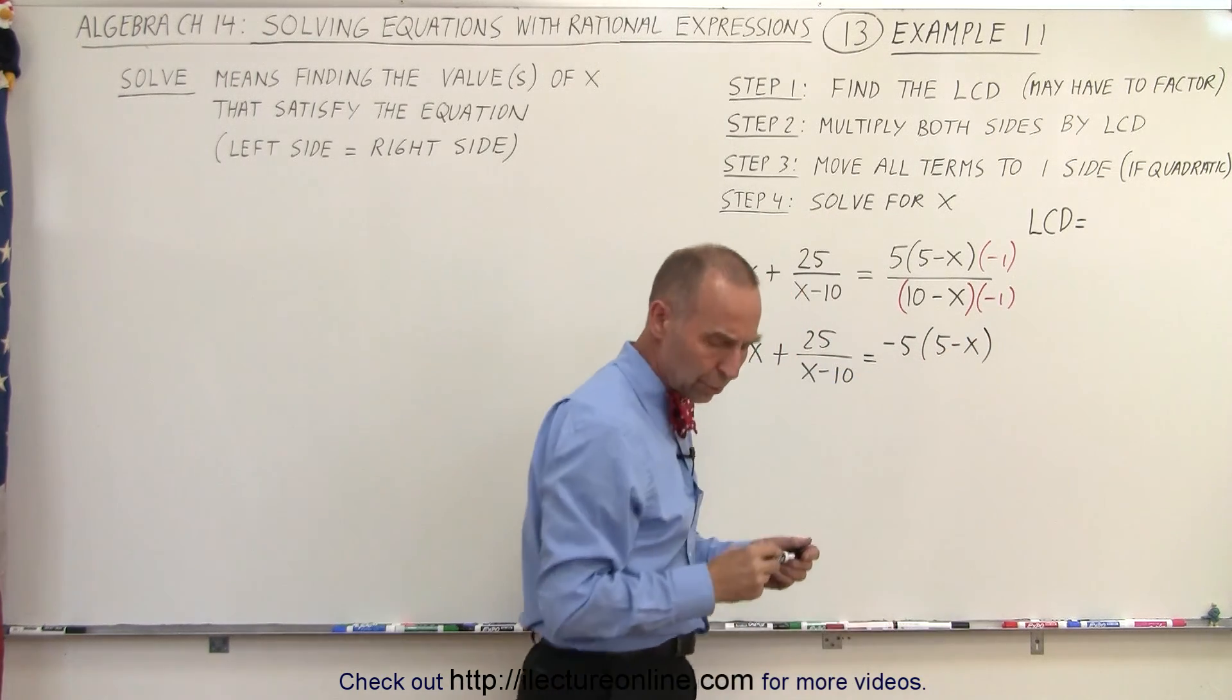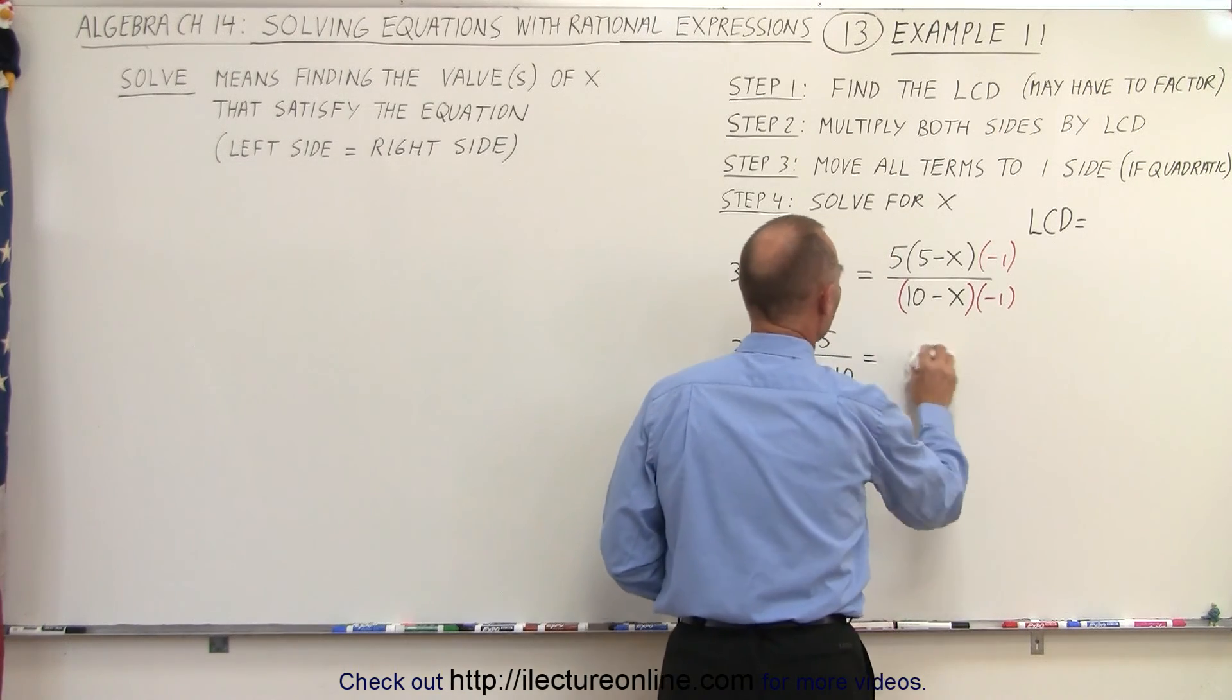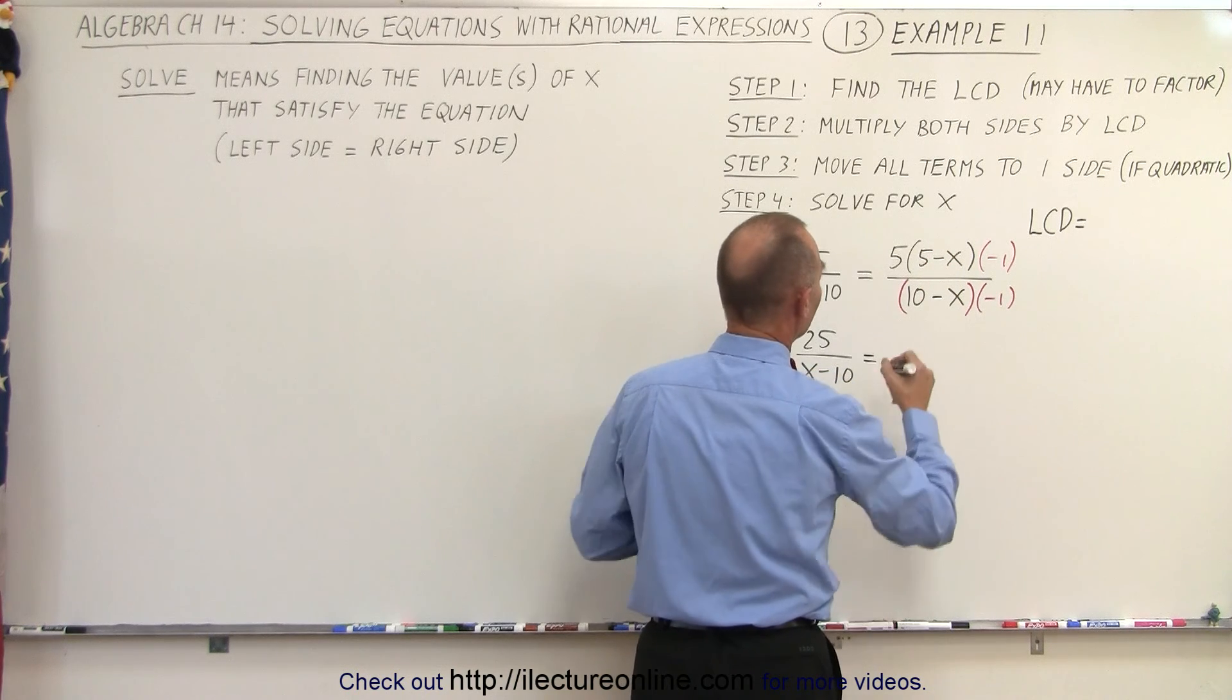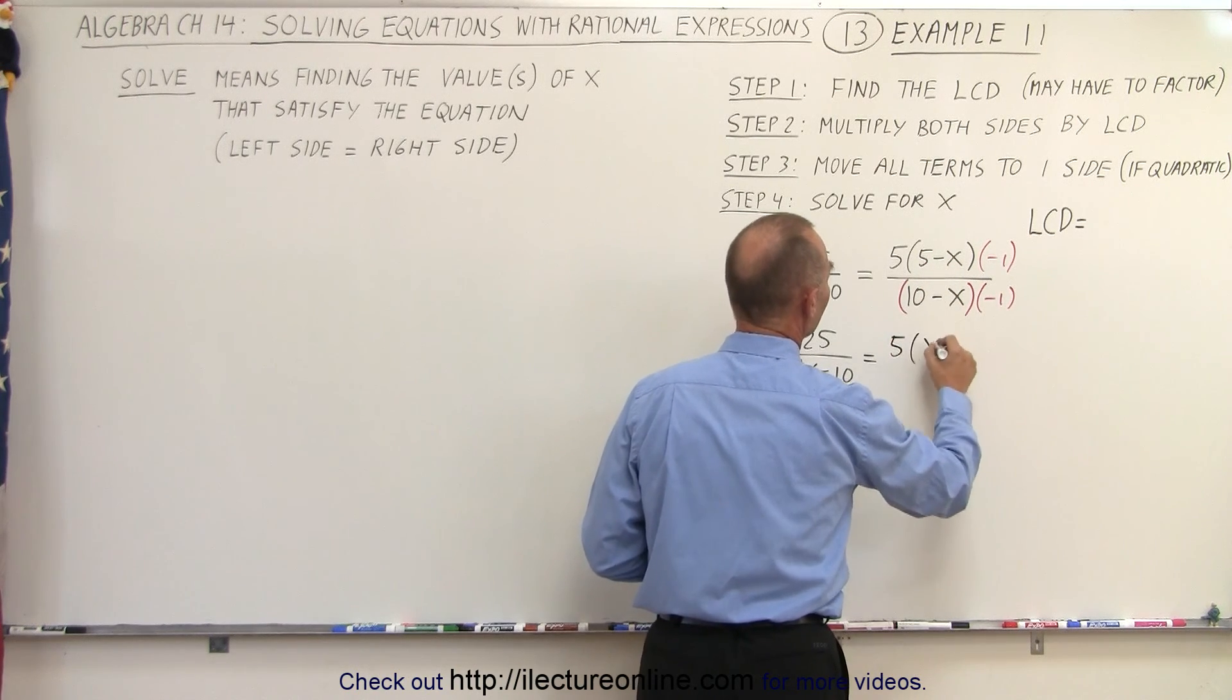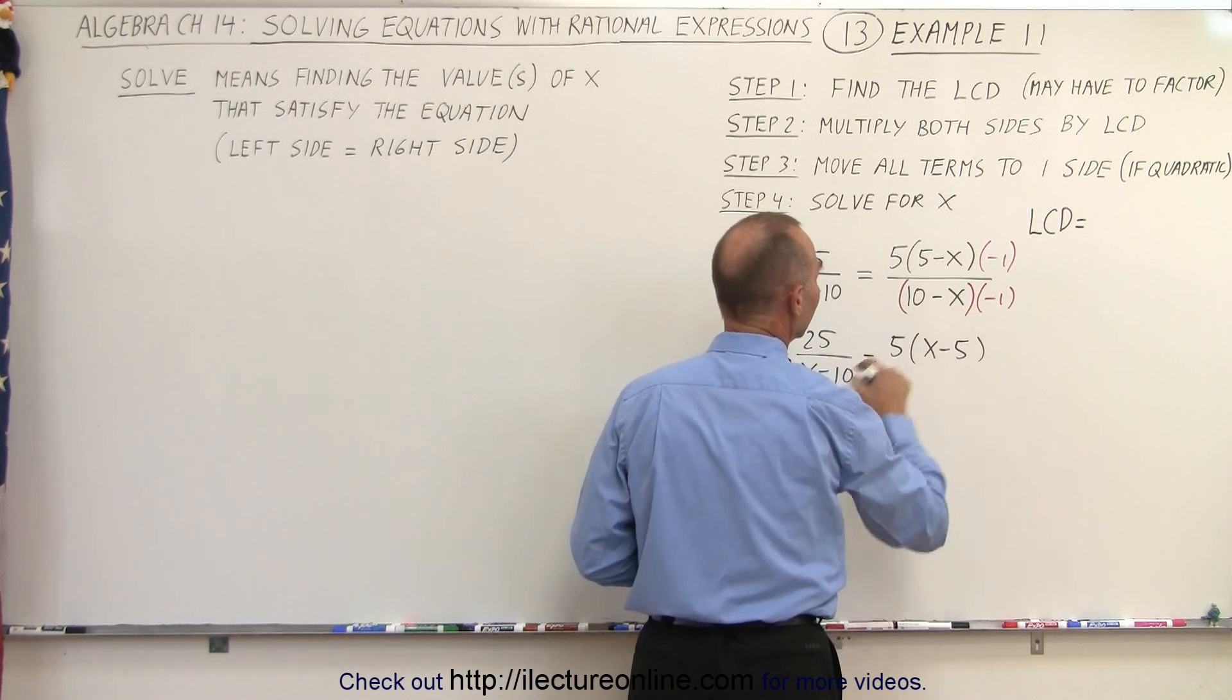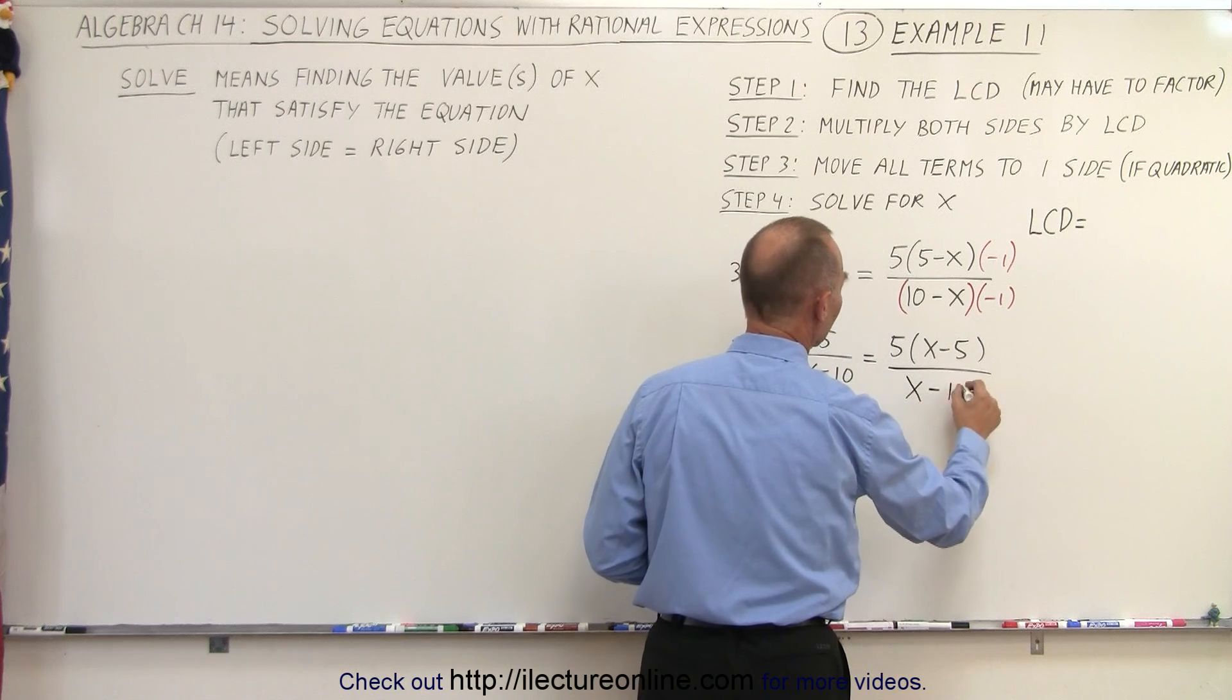notice we carry the negative 1, which becomes minus 5 times 5 minus x. Or, what I could have done, maybe in retrospect, I can apply the negative 1 here and switch those around. So write this as 5 times x minus 5, make the negative x a plus x, then the positive 5 a negative 5. And then the denominator do the same thing,